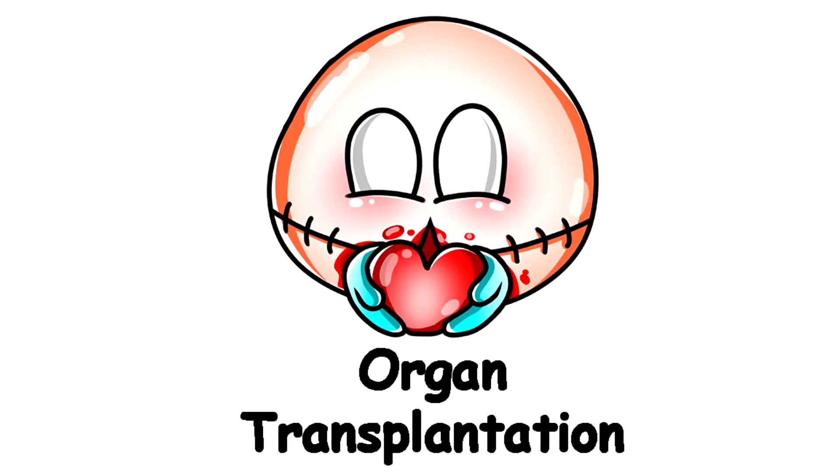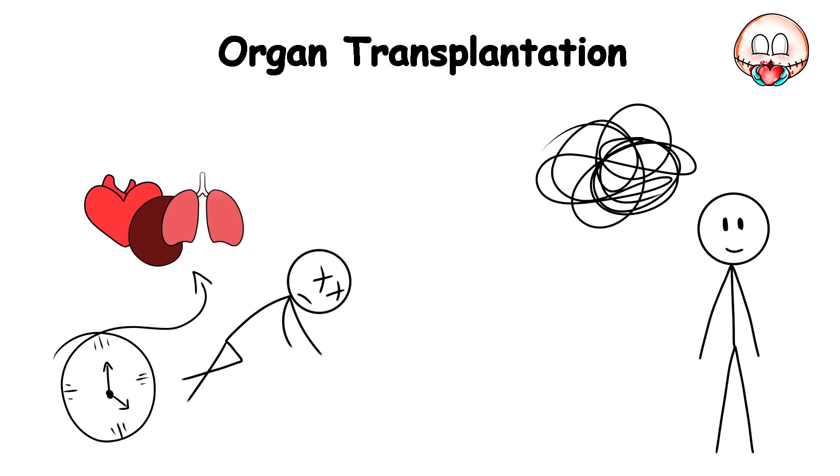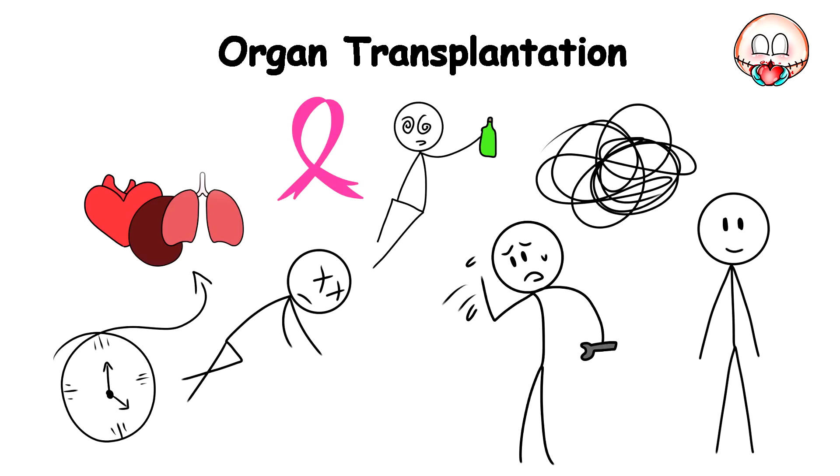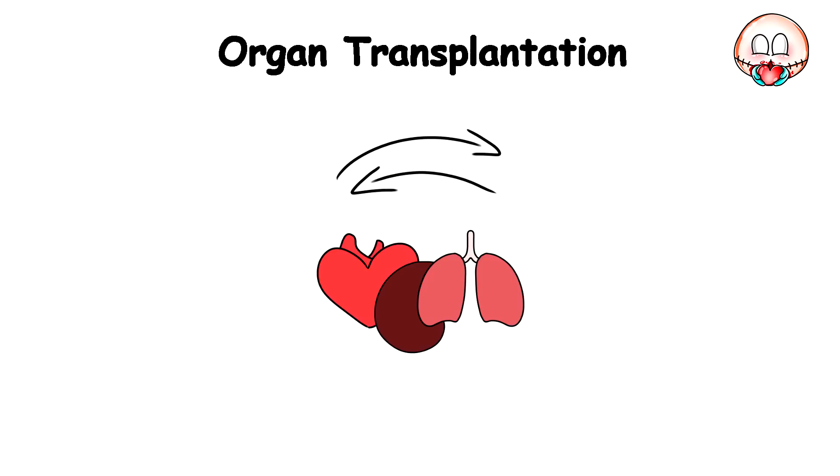Organ Transplantation. For a long time, when vital organs like the heart, lungs, or kidneys failed, it meant an unavoidable death sentence. The body parts are just too complex and too difficult to fix once damaged by things like cancer or excessive alcohol. However, with time, as medicine advanced, we could do more ambitious things like organ transplants.